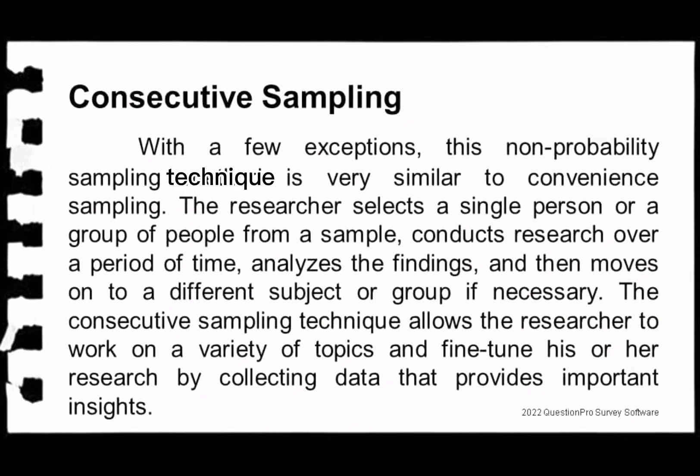Another non-probability technique is consecutive sampling. With a few exceptions, it is very similar to convenience sampling. The researcher selects a single person or group, conducts research over a period of time, analyzes the findings, and then moves on to a different subject or group if necessary. This technique allows the researcher to work on a variety of topics and fine-tune their research by collecting data that provides important insights.